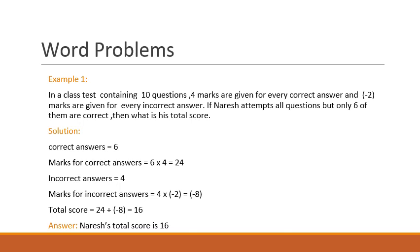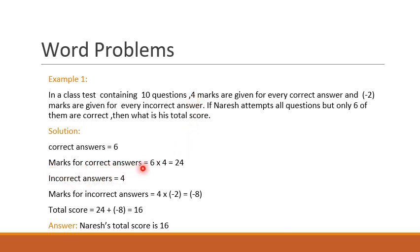Now let's see few word problems based on integers. Example 1. In a class test containing 10 questions, 4 marks are given for every correct answer and minus 2 marks are given for every incorrect answer. If Naresh attempts all the questions but only 6 of them are correct, then what is his total score? Now let's see the solution.